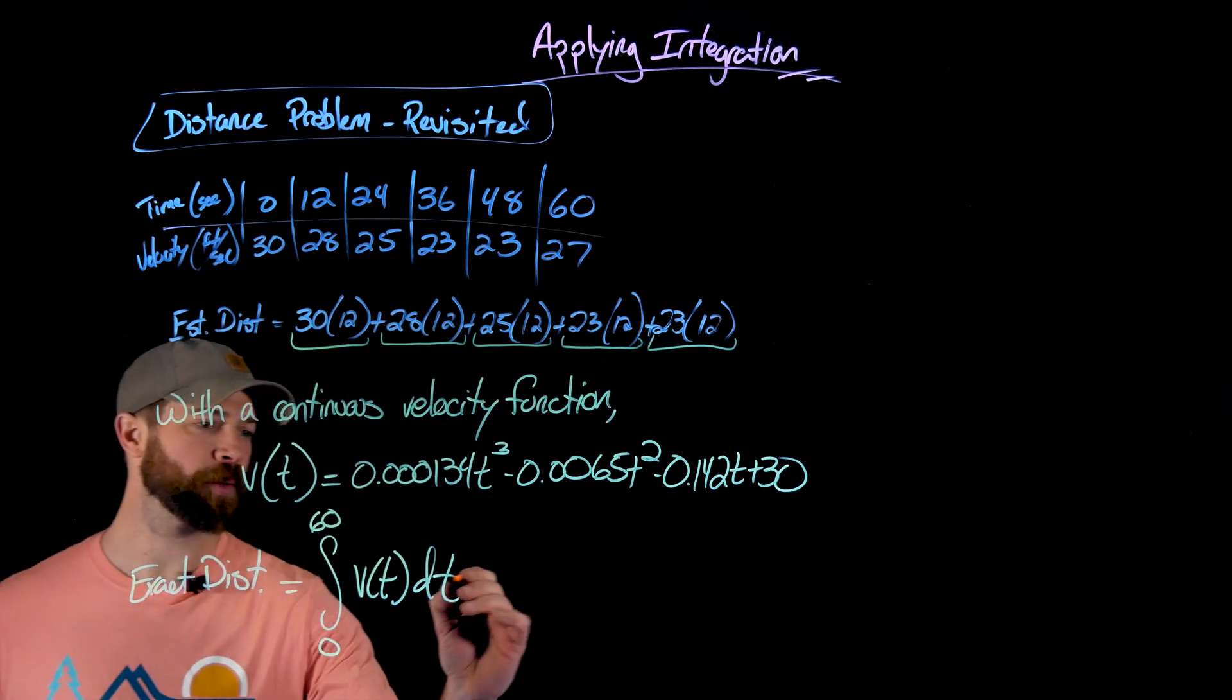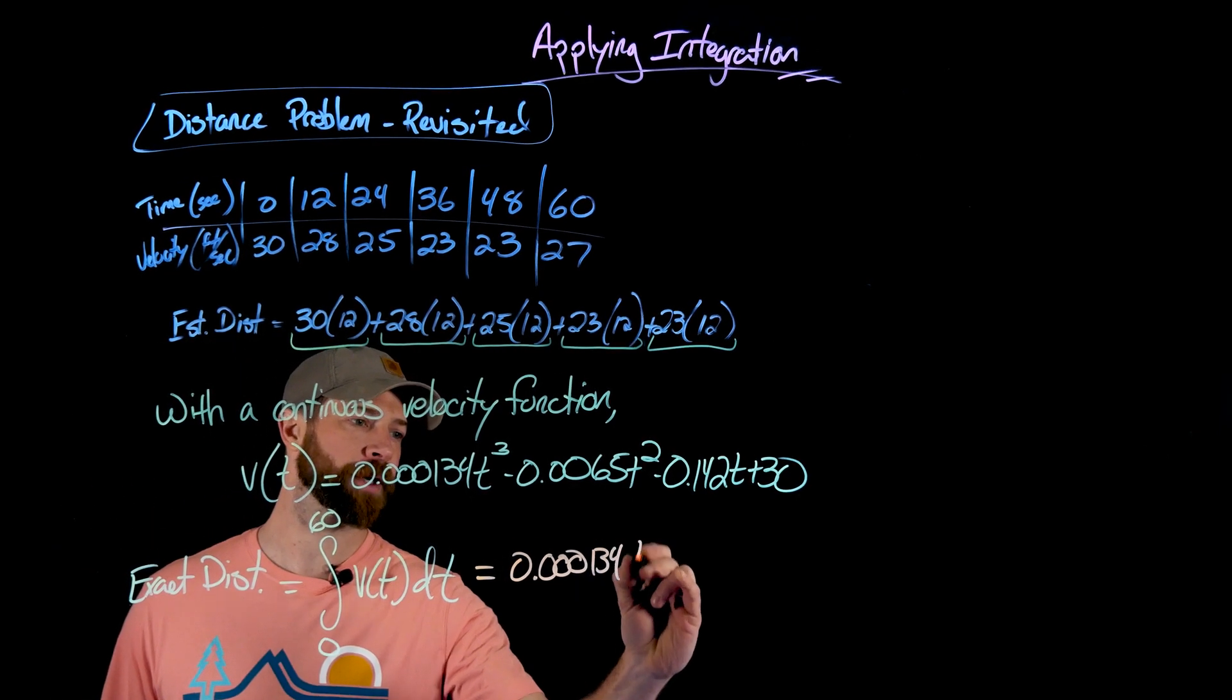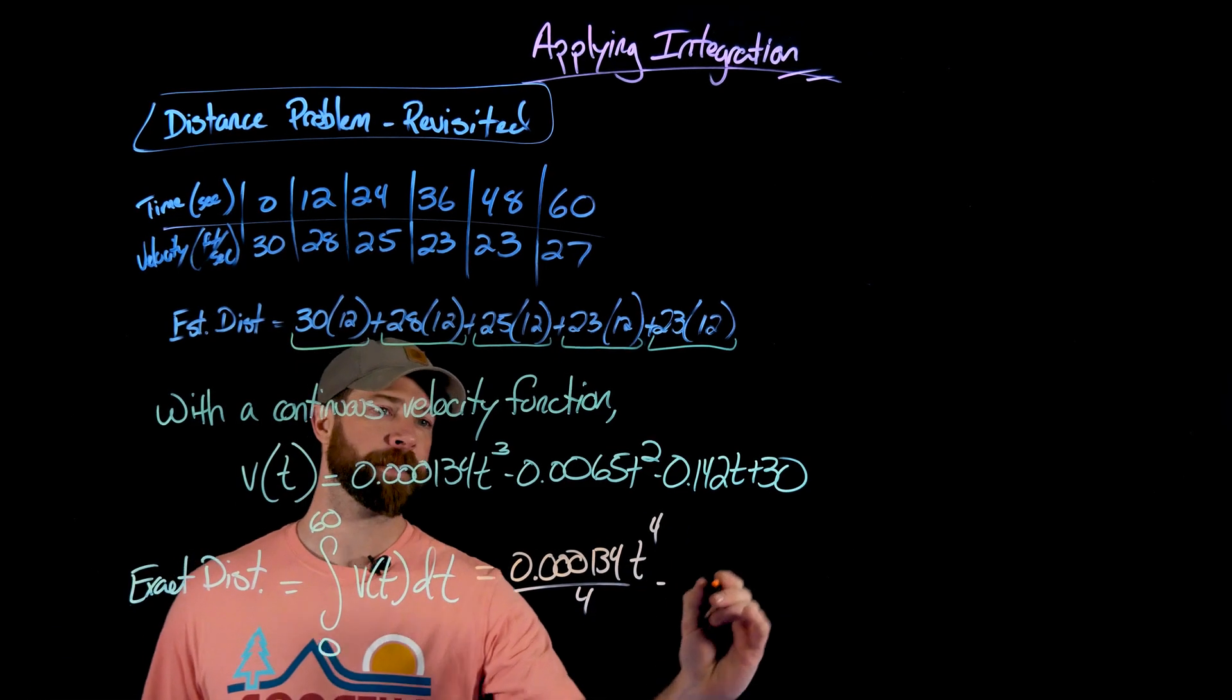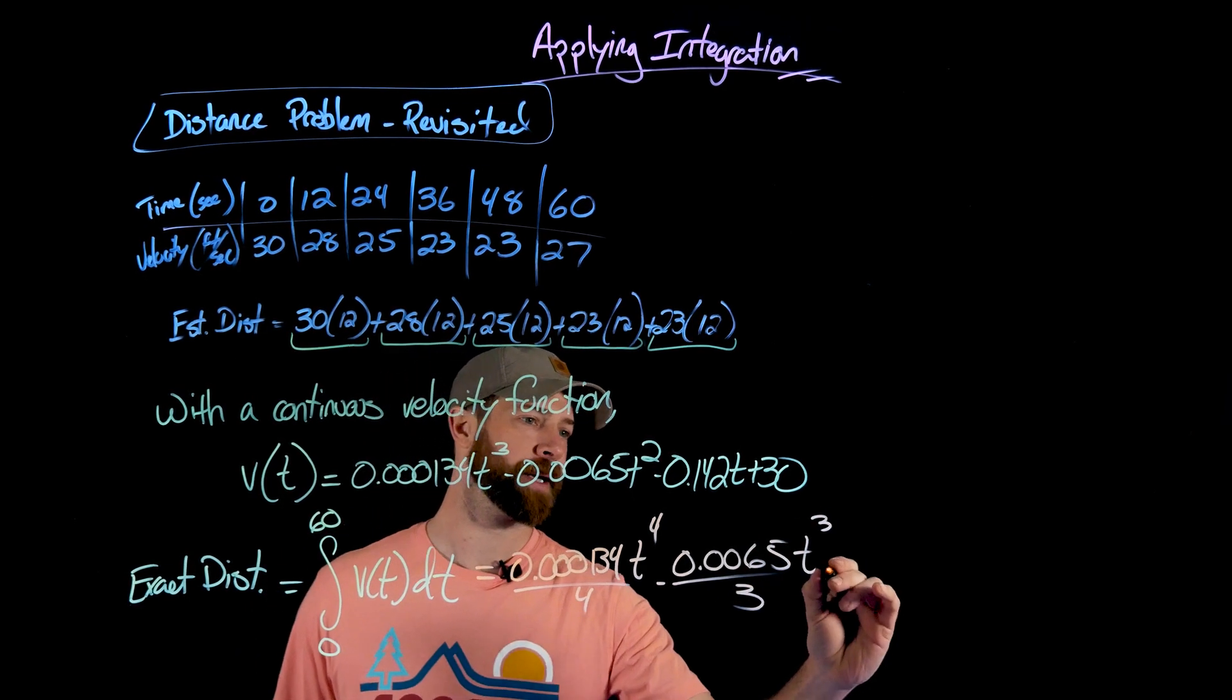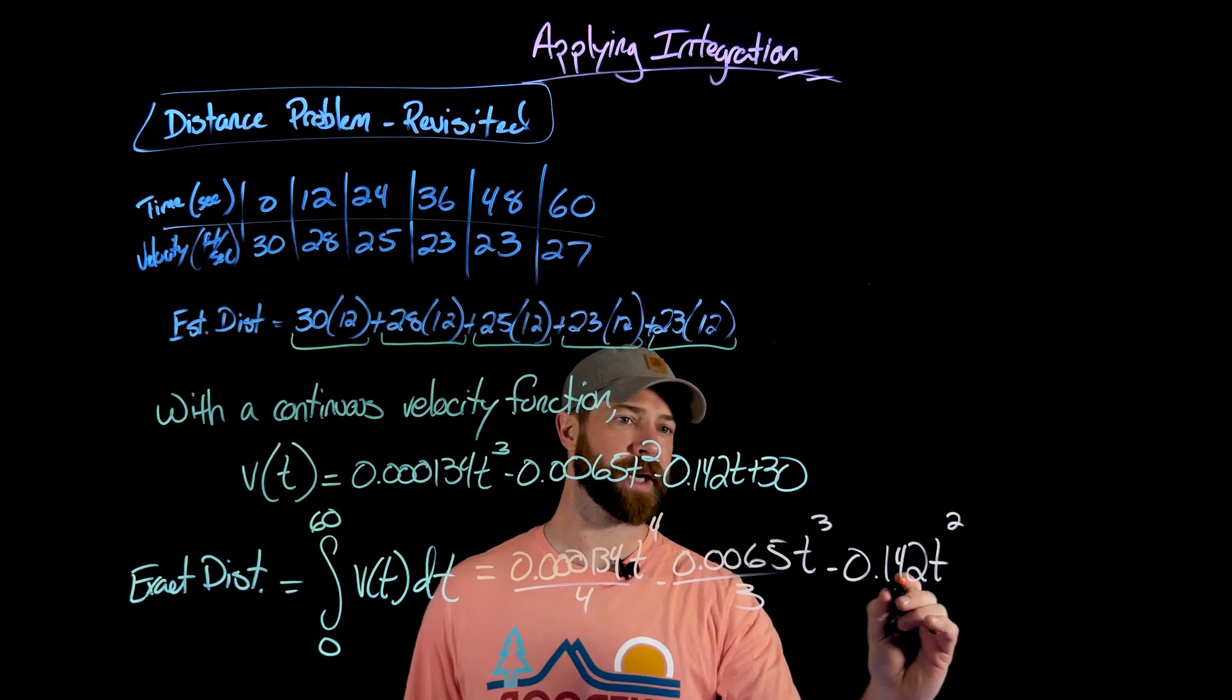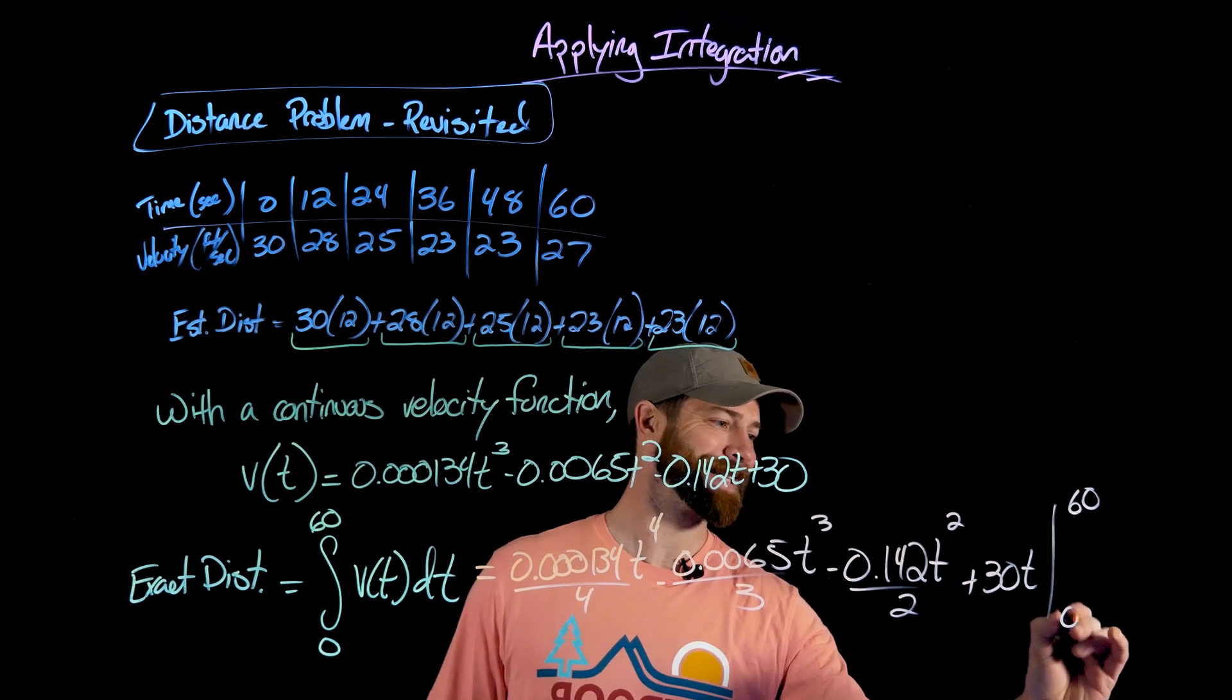Calculating this integral, all we need to use is the anti-power rule for each of these terms. So I get 0.000134t to the fourth, divided by four, minus 0.0065t cubed, divided by three, minus 0.142t squared, over two, plus 30t from 60 to zero.